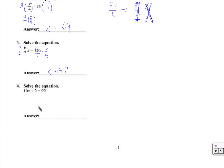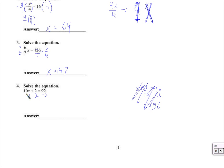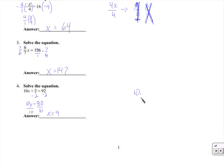Some of you are tempted to divide by 10 here — I'm not sure why, but it would be much easier to not divide by 10 right now. It would be easier to subtract 2 first. If you had x plus 2 equals 92, you'd subtract 2 from both sides to get x equals 90. But that's not our problem. Subtract 2 from both sides — 10x equals 90 — and now I can divide by 10, giving x equals 9.